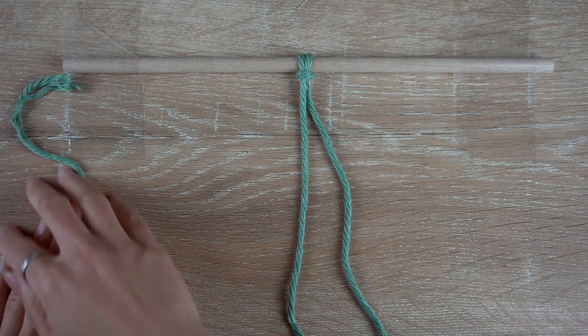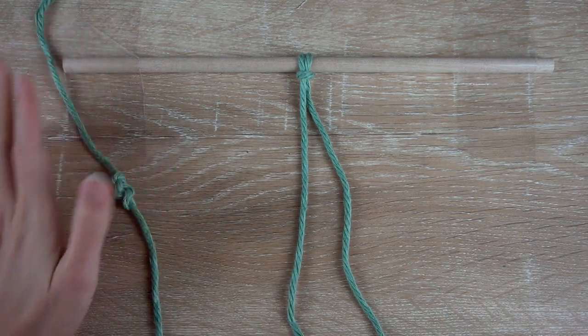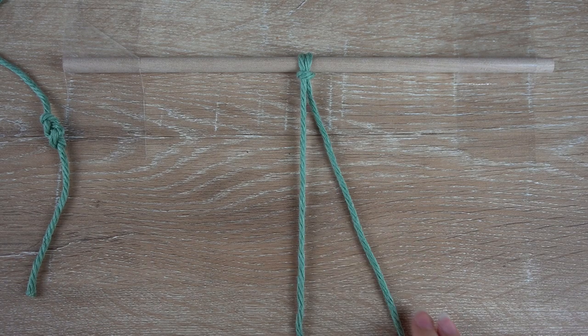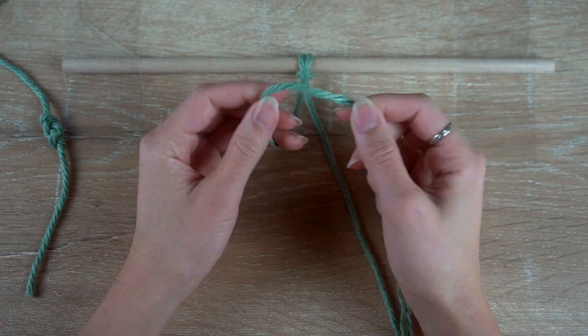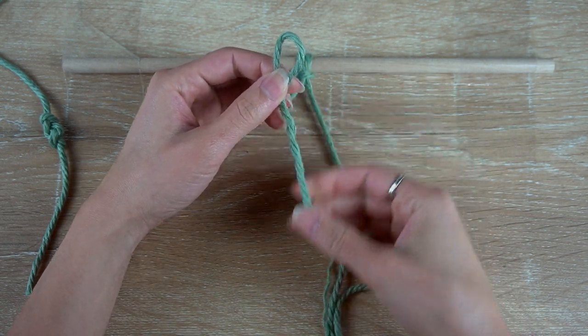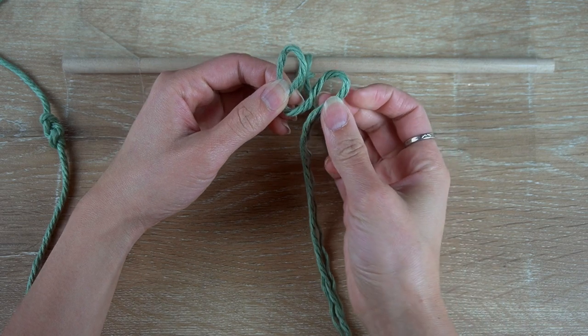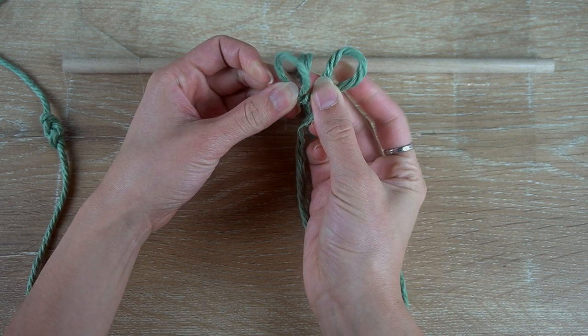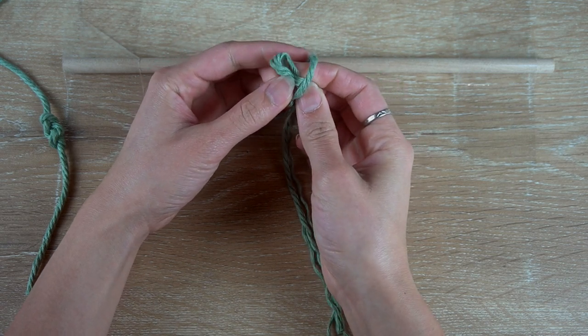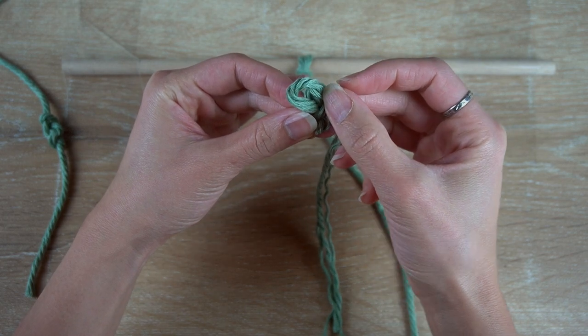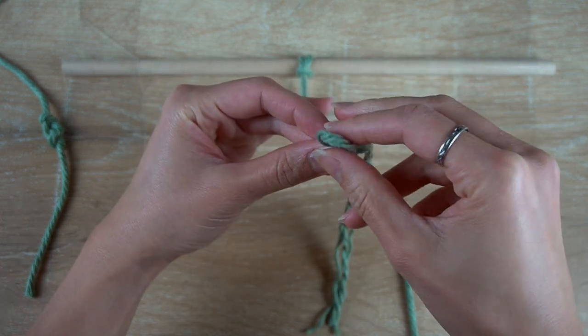We will now make a vertical eternity knot. It is made the exact same way as a horizontal one, you just look at it a little differently. Start by taking the right side and folding it over to the left to form a loop. Then on the right side we'll scrunch up a part of the cord and form another loop.